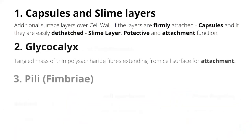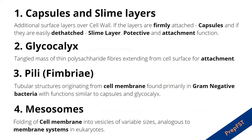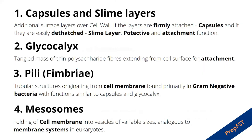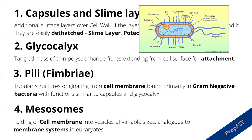Coming to the particular structures of the bacterial cell not always present in all bacteria. Number one is the capsule and slime layer. Capsules are additional surfaces over the cell wall; if the layers are firmly attached and visible with the light microscope they are called capsules, and if they are easily detached and diffuse into the surroundings they are known as slime layers. The function of both is protective and for attachment. Second is the glycocalyx, which has a similar function of attachment and is a tangled mass of thin polysaccharide fibers extending from the cell surface.